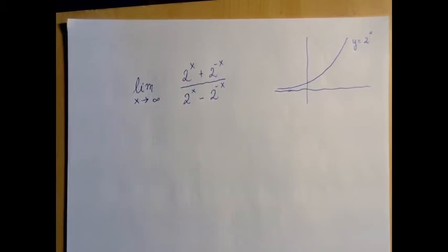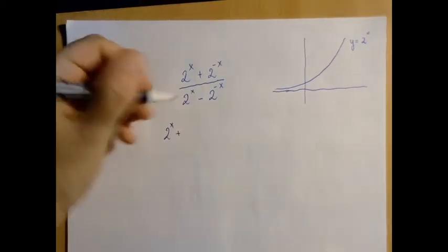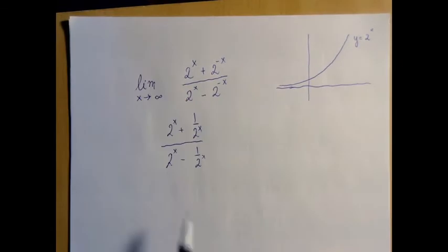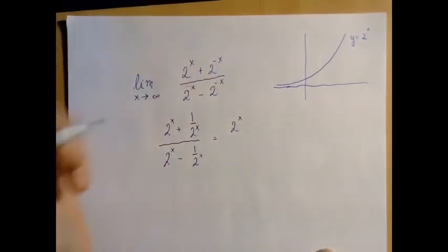When we feel like this one is insignificant, what we usually do is factor out what matters. Let us rewrite 2 to the negative x as 1 over 2 to the x. And so this is big, this is small. So we're going to factor out 2 to the x.